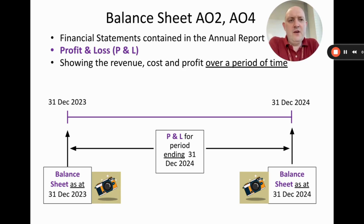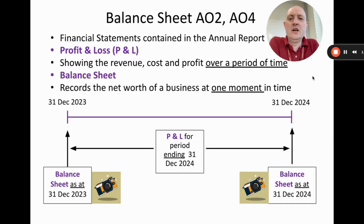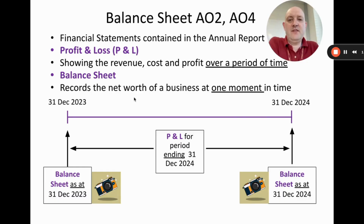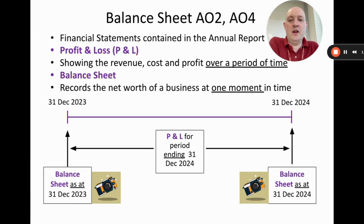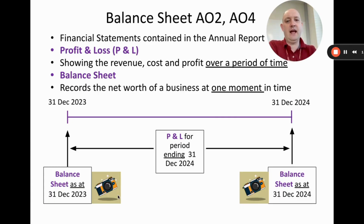The profit and loss covers revenue, cost, and profit over a period of time — usually a year or a quarter. The balance sheet instead looks at the net worth of a business at one moment in time. The net worth is effectively one measure of the value of the business on that particular day — for example, as at the end of December 2023.